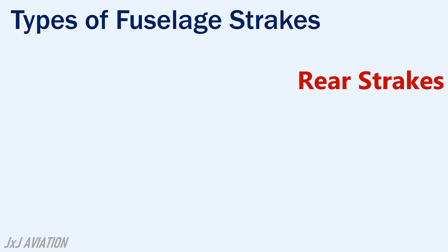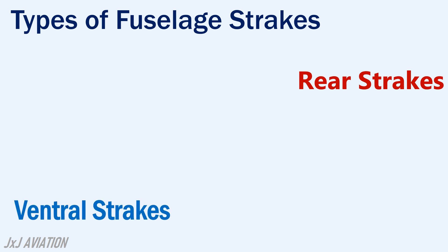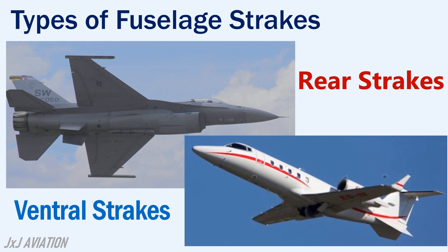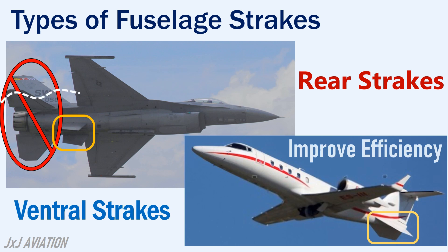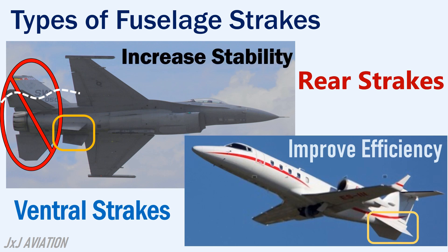Rear strakes, also called ventral strakes, are installed under the fuselage near the tail section to improve efficiency at the tail section. On some aircraft at high angles of attack, the tail will not be effective because of the wake created by the fuselage and the wings. So these strakes are used to increase stability at the tail section when the aircraft is flying at high angles of attack.